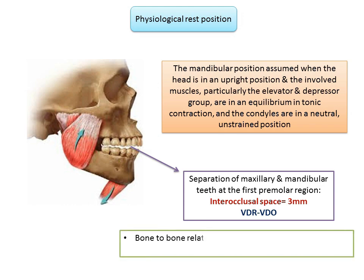The significance of physiological rest position is that it is a bone-to-bone relation which remains fairly constant throughout life in the absence of any pathosis. The vertical dimension at rest should be recorded at the physiological rest position of the mandible.